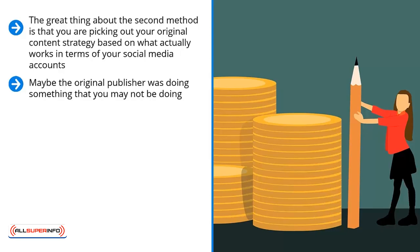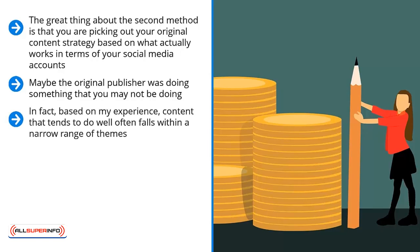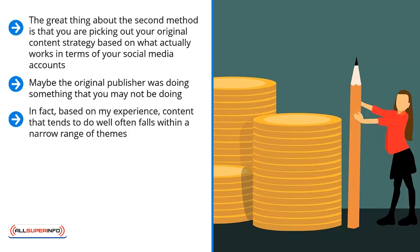Do curation first, let it run, and then pay attention to your statistics. You should be able to see a pattern. Based on my experience, content that tends to do well often falls within a narrow range of themes. In fact, in some of my campaigns, almost all of the content that got a lot of love from the Internet was focused on one question. That's how focused your audience's needs may be.